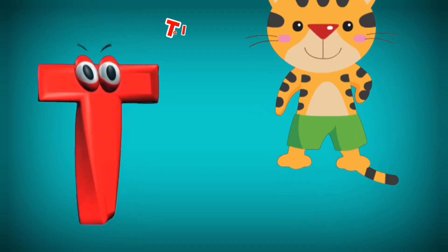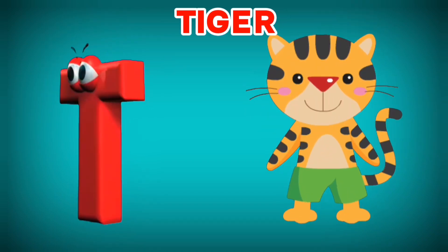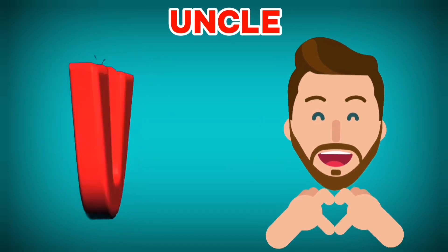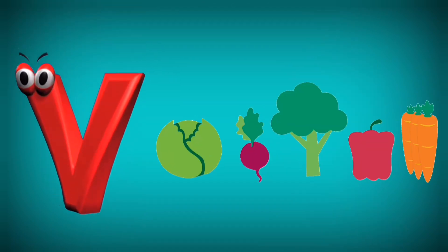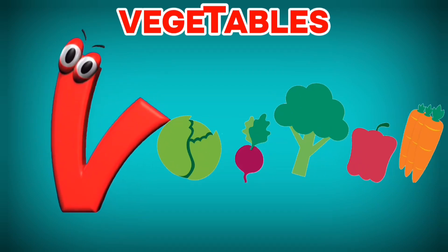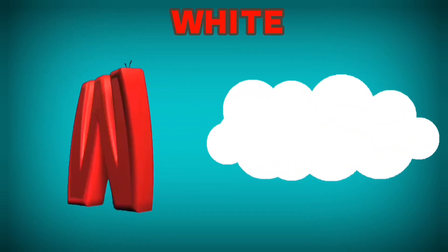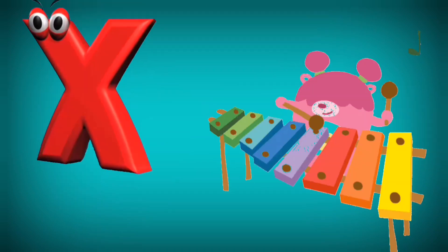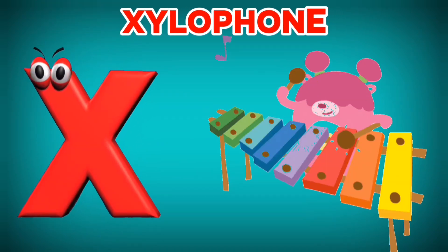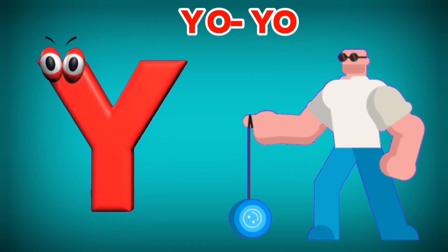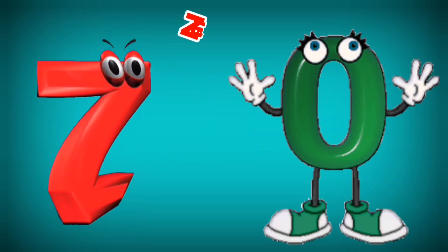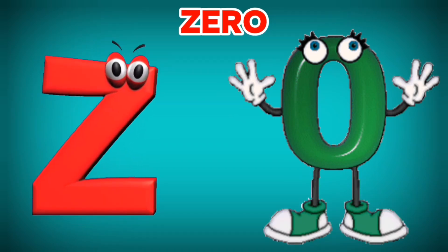T is for Tiger. T, T. Tiger. U is for Uncle. U, U. Uncle. V is for Vegetables. V, V. Vegetables. W is for White. W, W. White. X is for Xylophone. X, X. Xylophone. Y is for Yoyo. Y, Y. Yoyo. Z is for Zero. Z, Z. Zero.